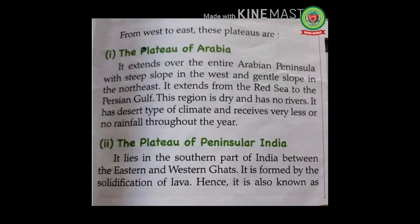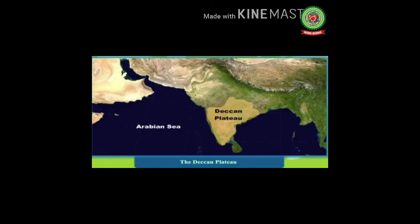The Plateau of Peninsular India lies in the southern part of India between the eastern and western ghats. It is formed by the solidification of lava and is also known as the lava plateau or Deccan Plateau. The Deccan Plateau is a large plateau in western and southern India.